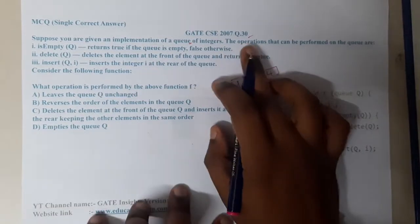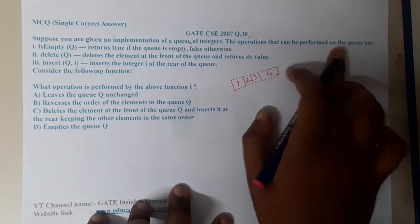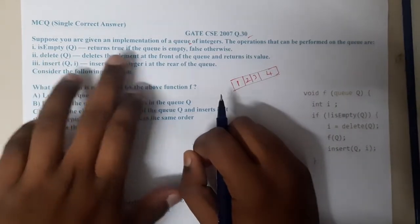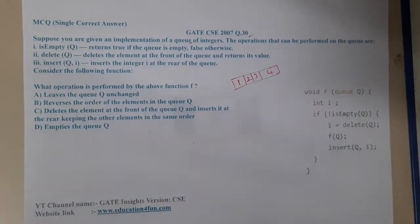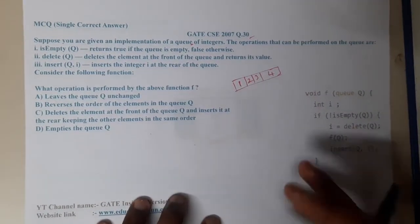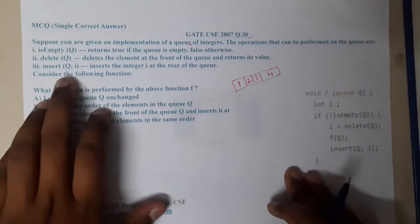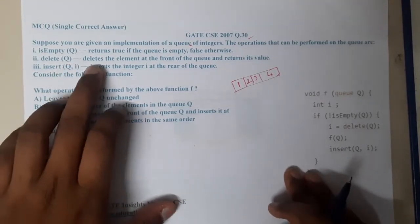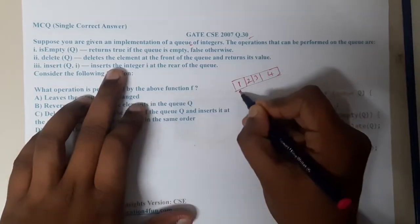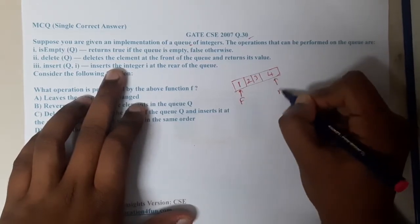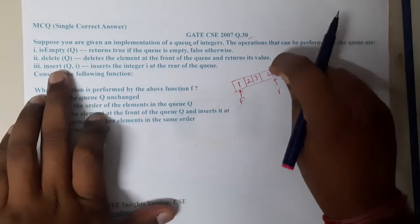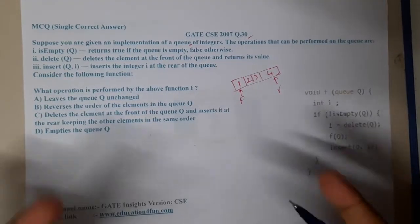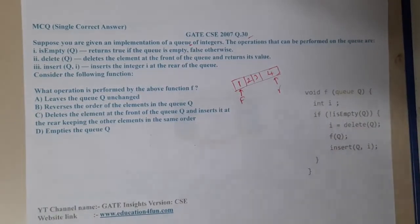The operations that can be performed on the queue are: isEmpty, which returns true if the queue is empty or false otherwise; delete Q, which deletes the element at the front; and insert, which inserts an element at the rear. So here we have front and rear.